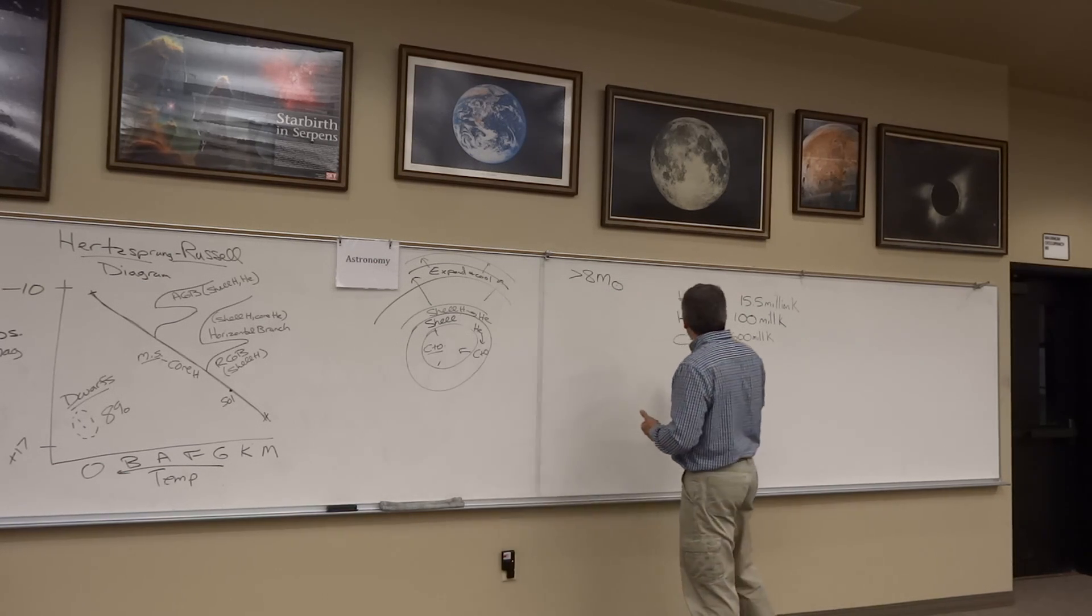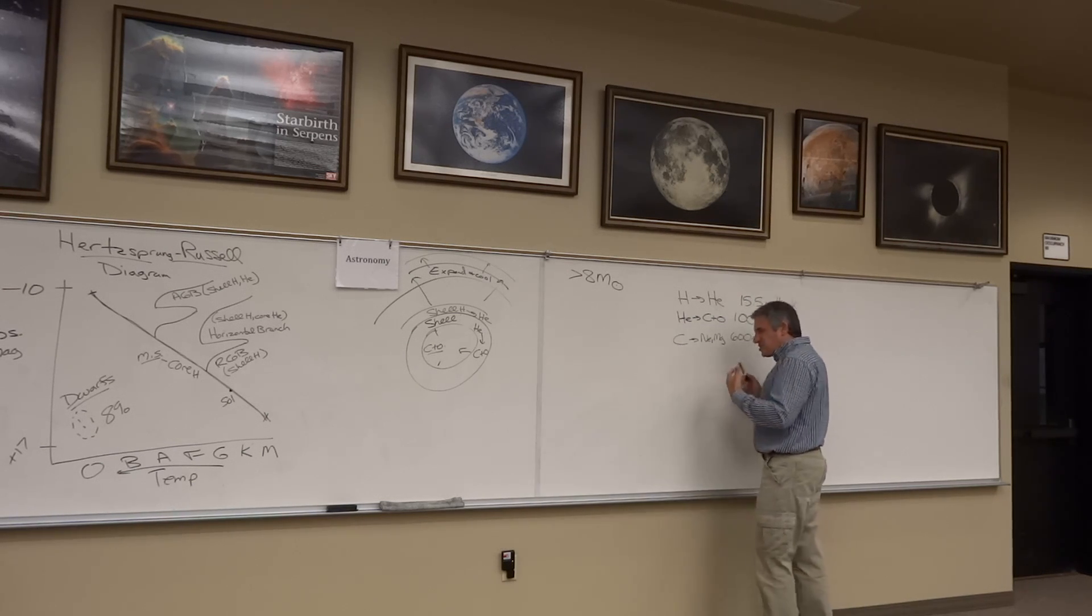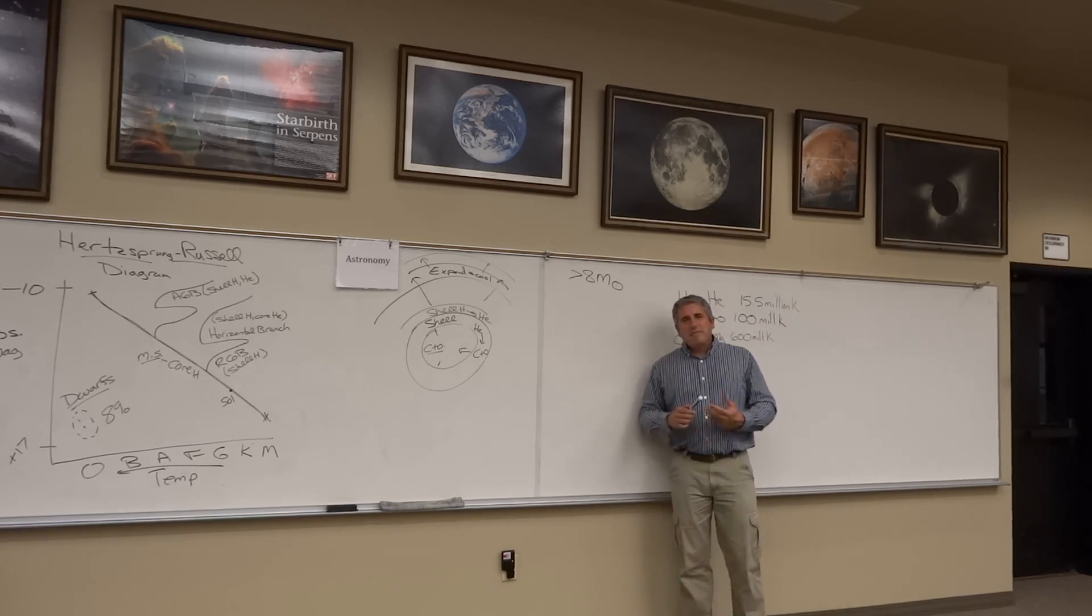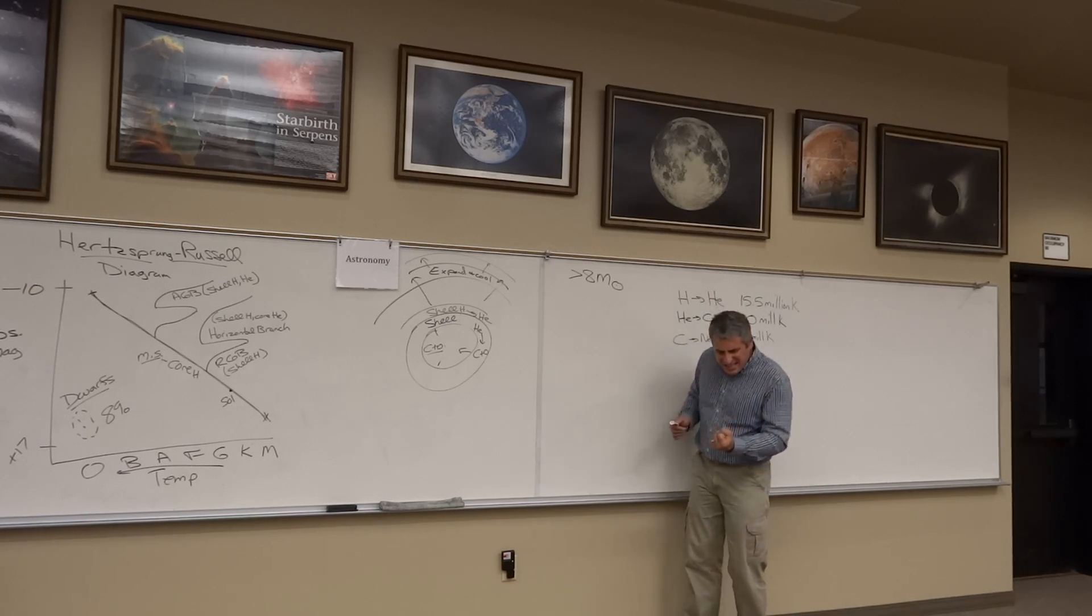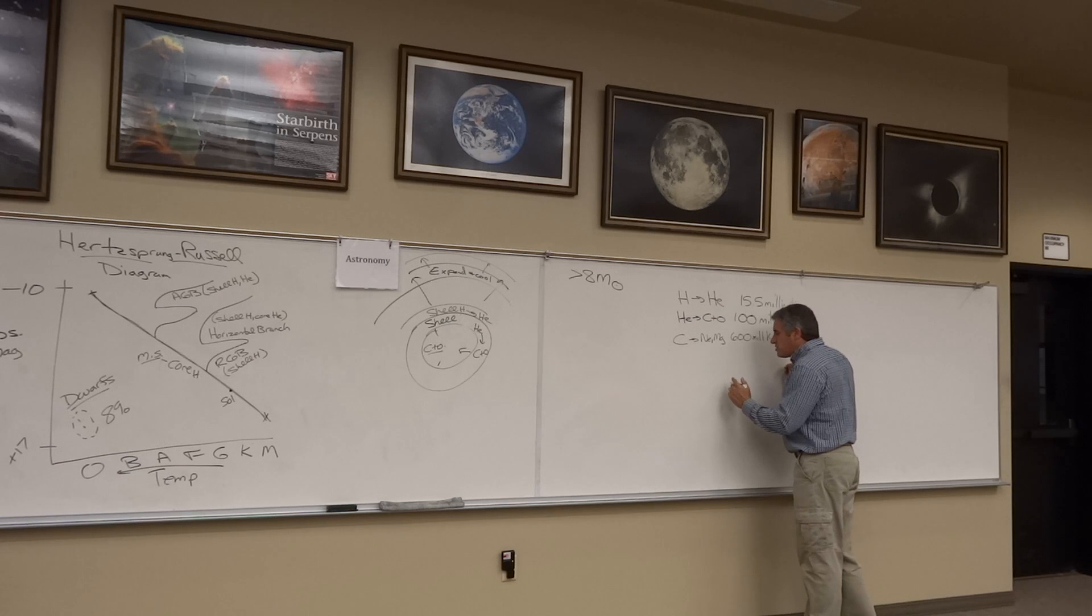They can in fact burn carbon into neon and magnesium and they burn neon into sulfur, silicon, phosphorus. They burn all the way up the list. They take that silicon and burn it at higher and higher temperatures. They finally at temperatures of billions of Kelvin reach iron.